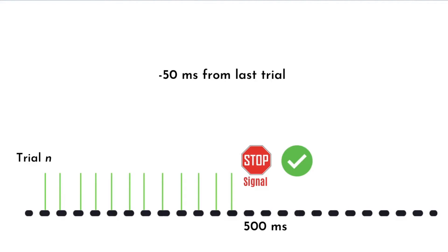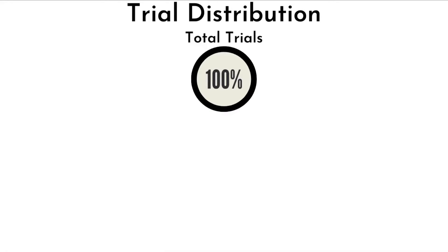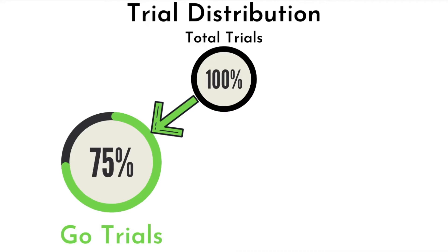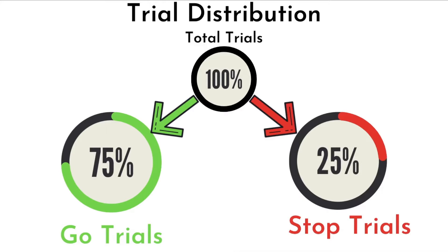Moving on, let's answer the question of how often the stop signal is presented. Usually, if we consider that the total number of trials is 100%, typically 75% of the trials are go trials, and about 25% of the trials are stop trials. Although this is a typical trial distribution, it could differ across different studies based on different research questions, different participant pools, and so on.